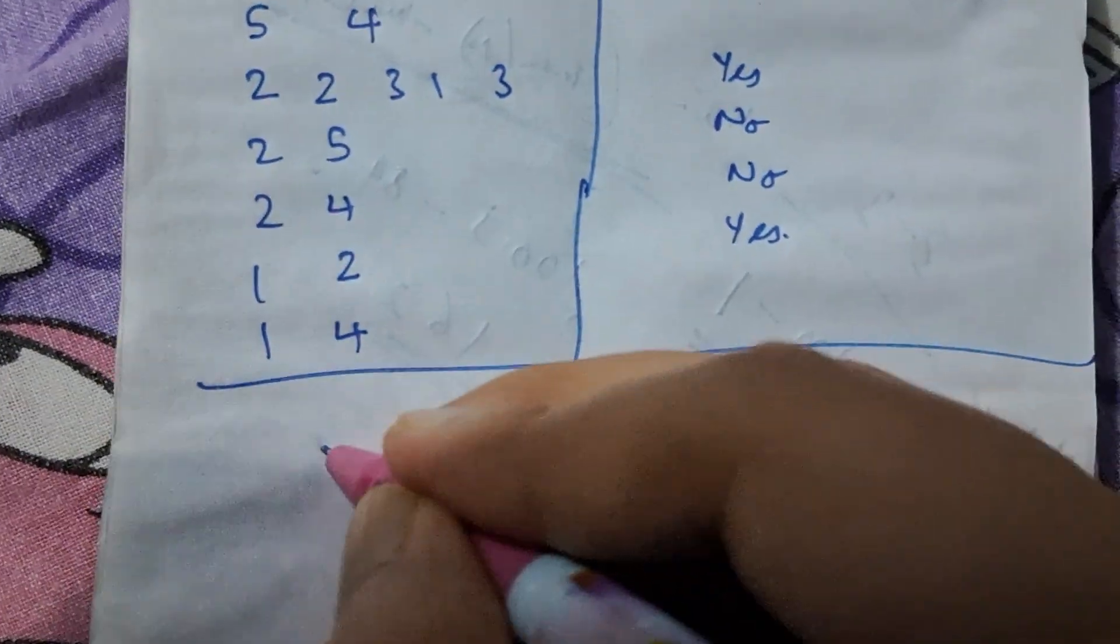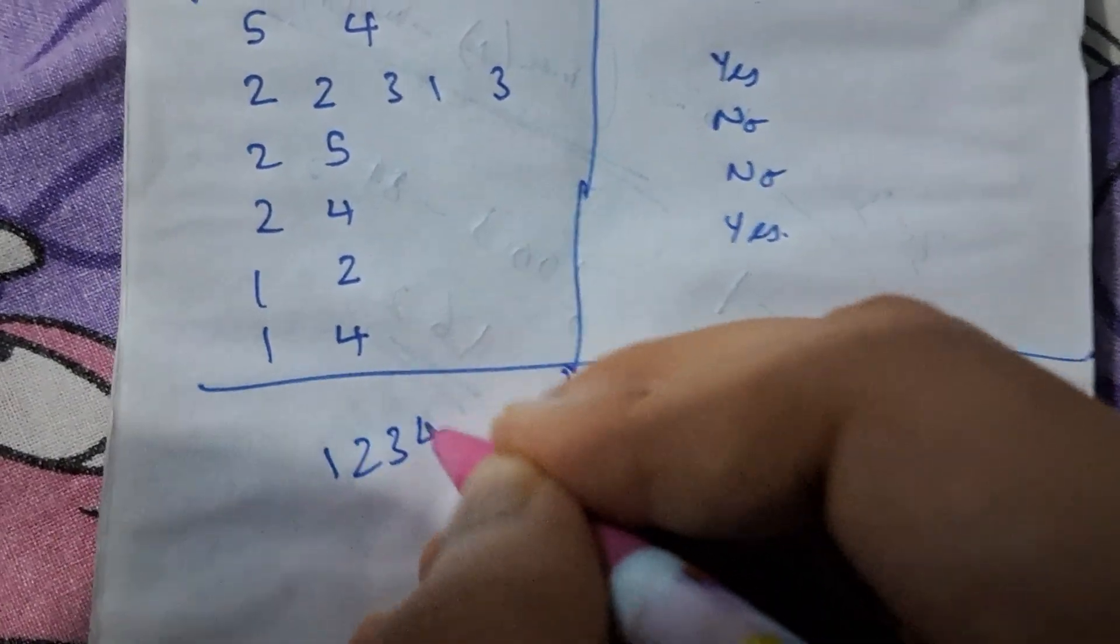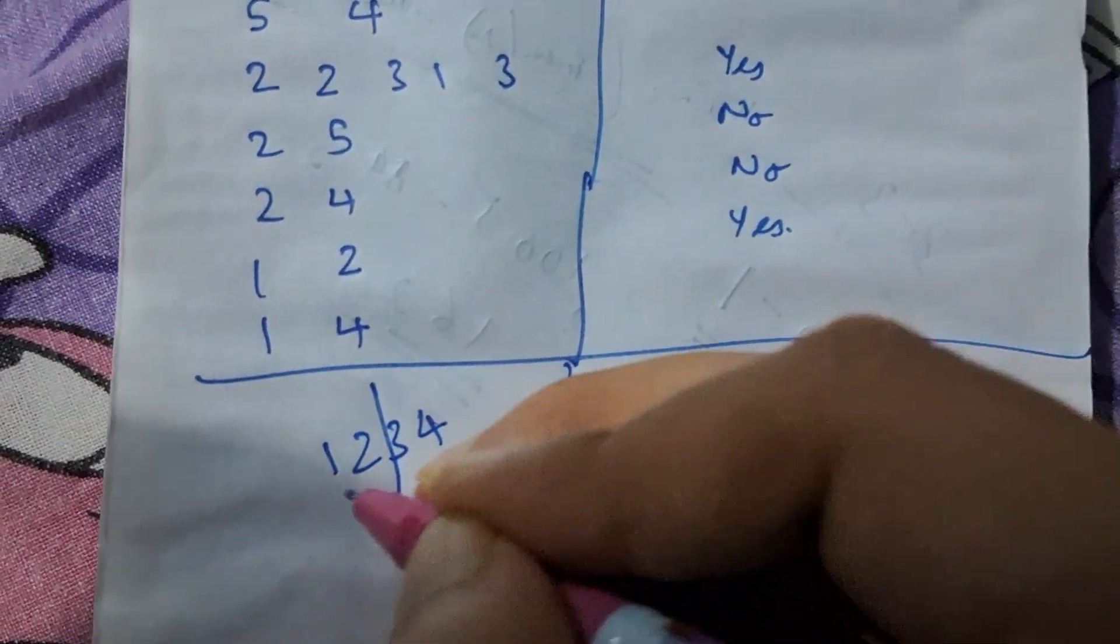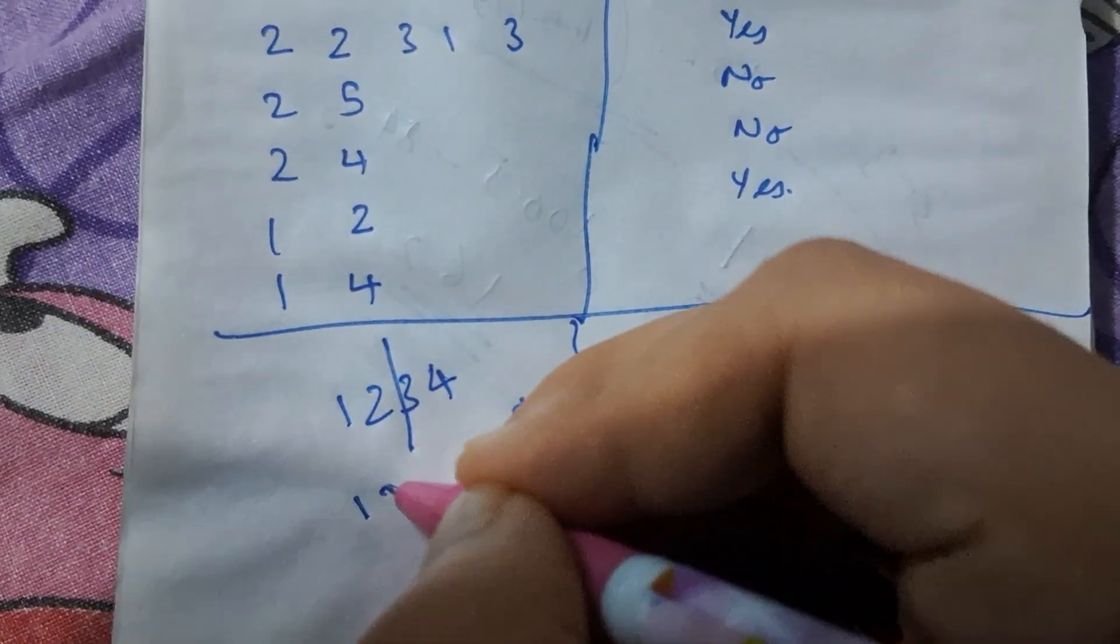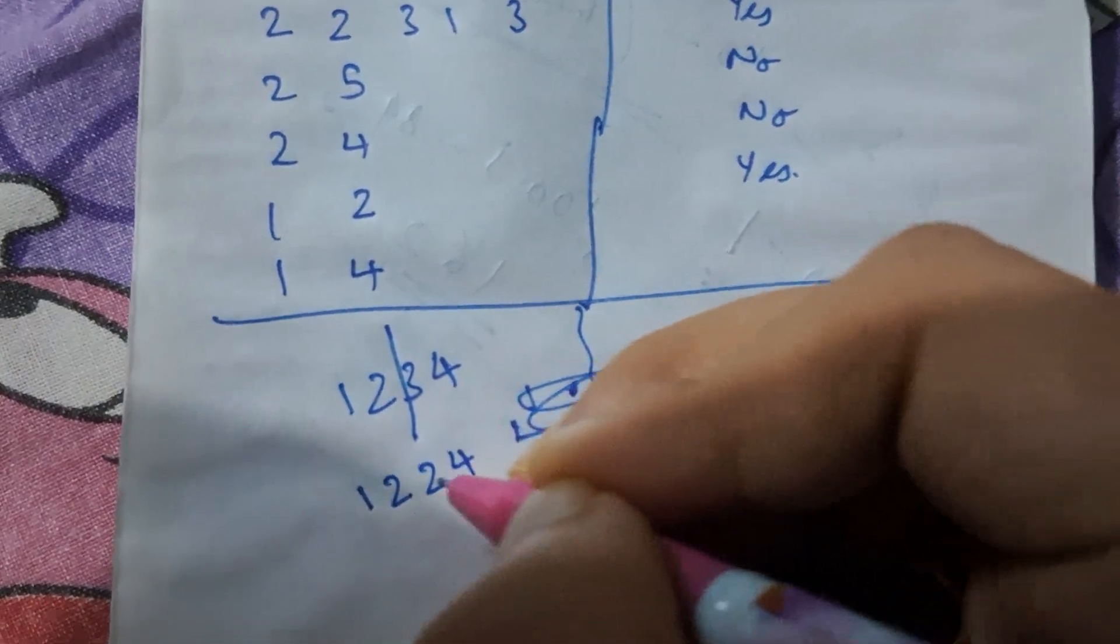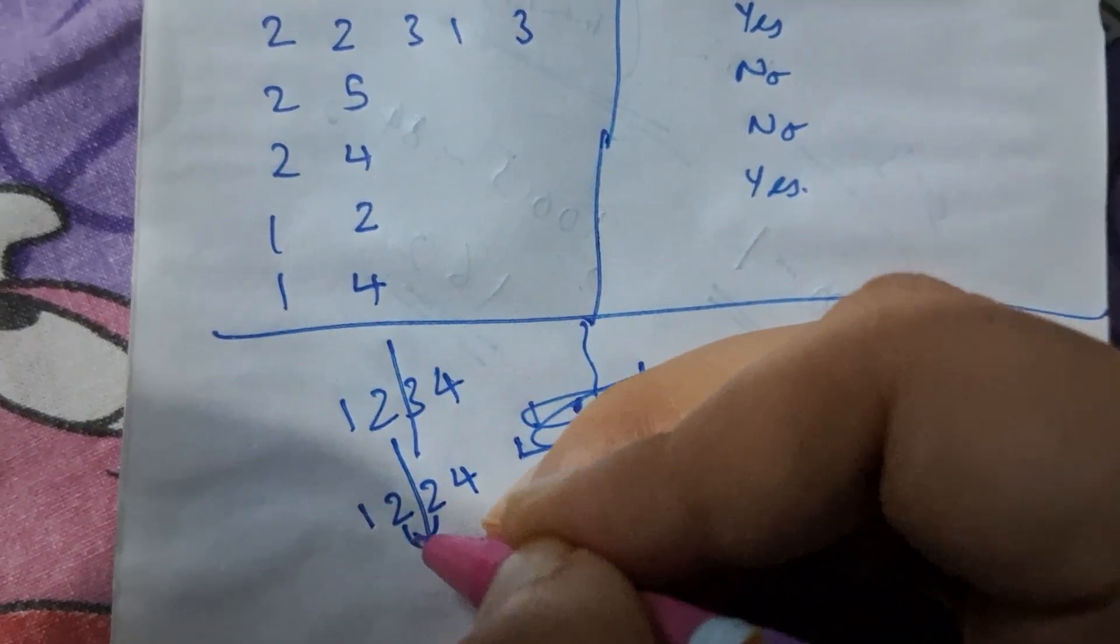An example of anti-palindromic will be if all the elements are different. Now this is not anti-palindromic. A thing that is not anti-palindromic will be like this, because if you draw a line over here, these two elements are palindromic.